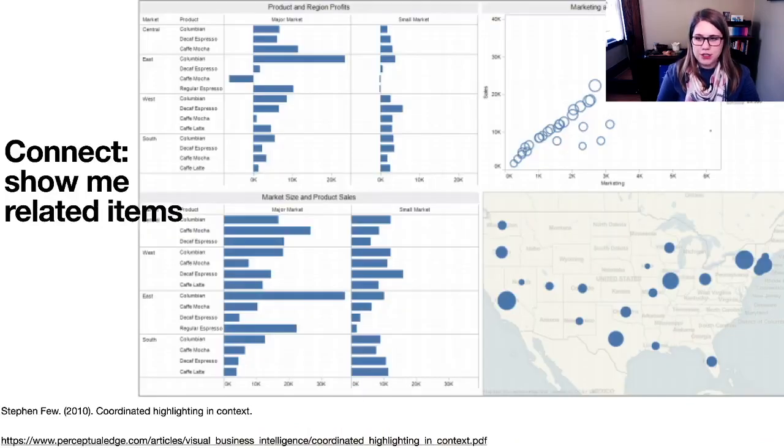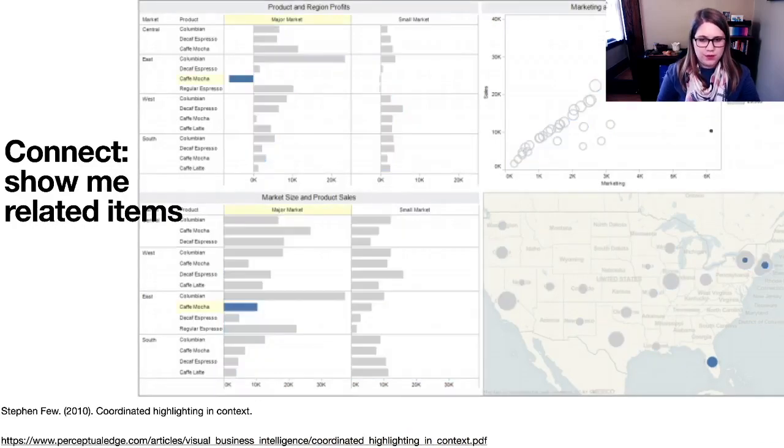And then I think I mentioned coordinated highlighting. So if you are using some selection, painting over what you're interested in, if you have the connection between all the pieces, then it's going to allow you to see the relationship between those variables. So those are just a few strategies for trying to visualize more than two or three variables by using some strategies that work for you as you're analyzing data and some that are better for representing it to a final audience.